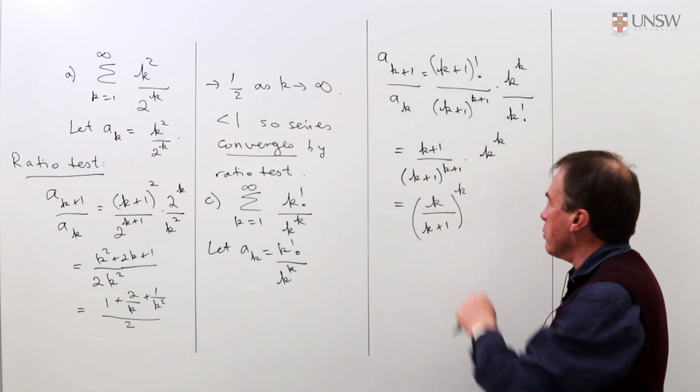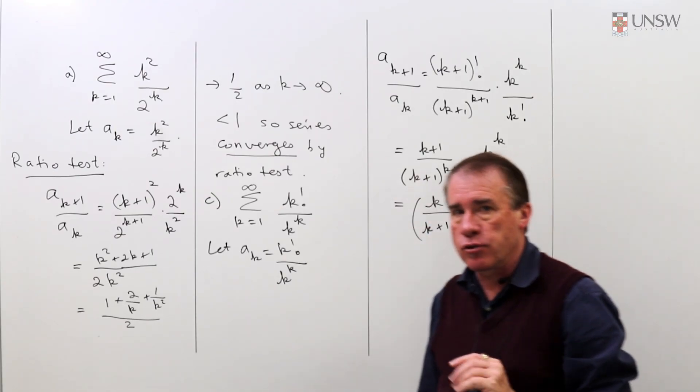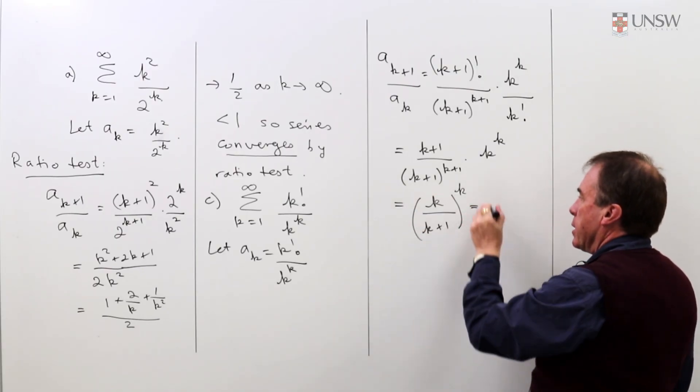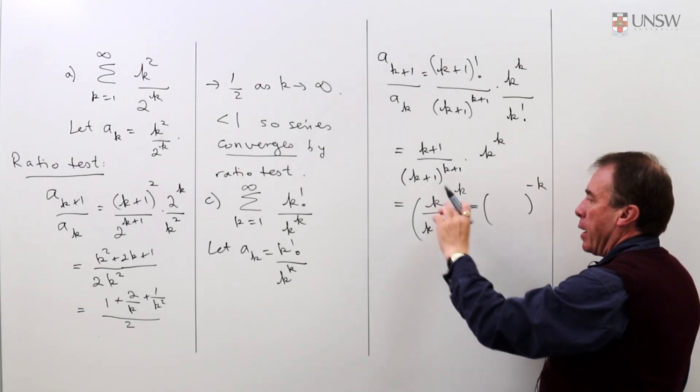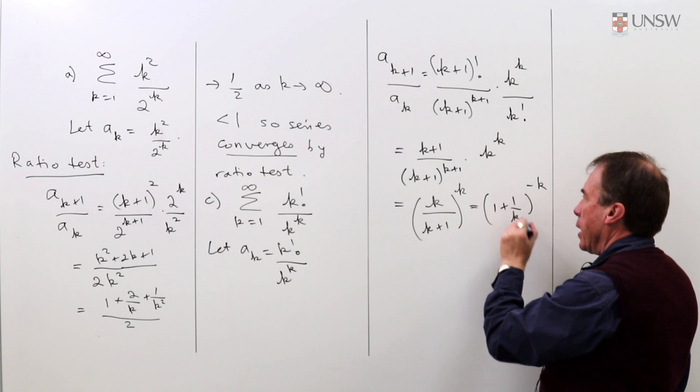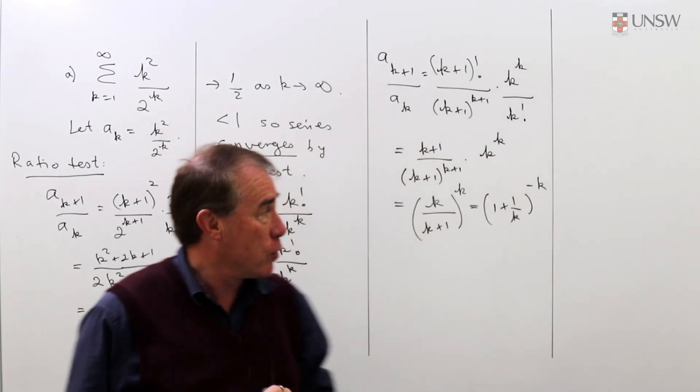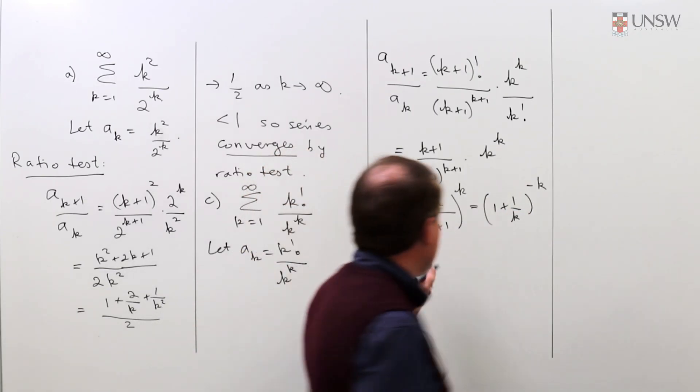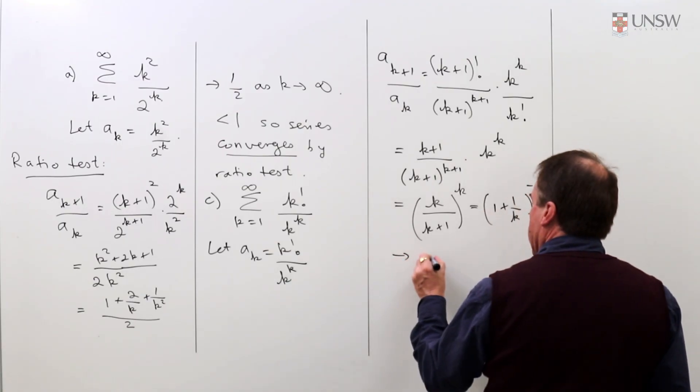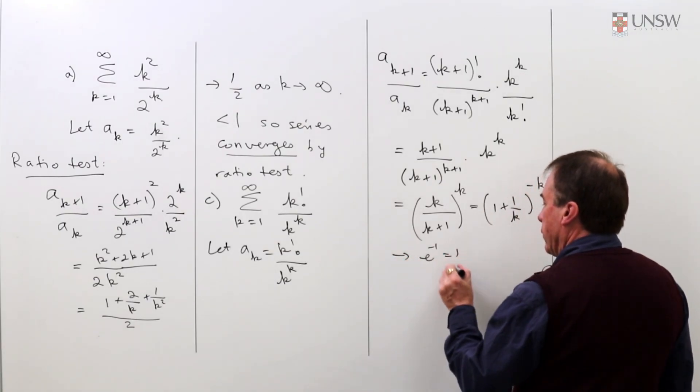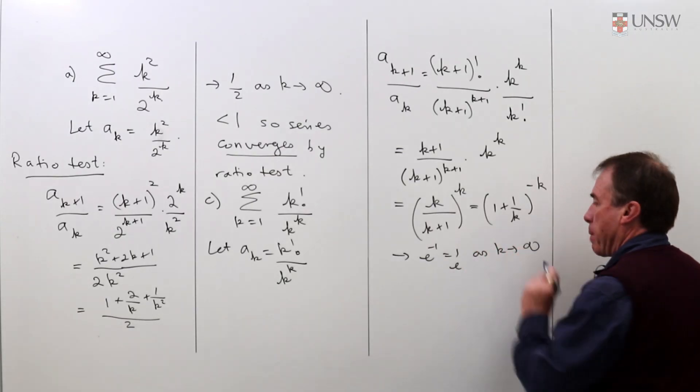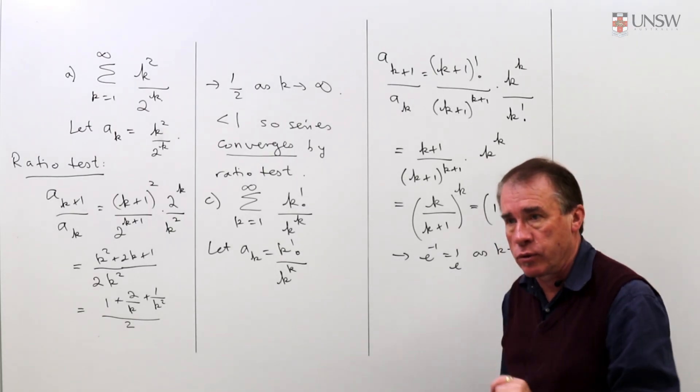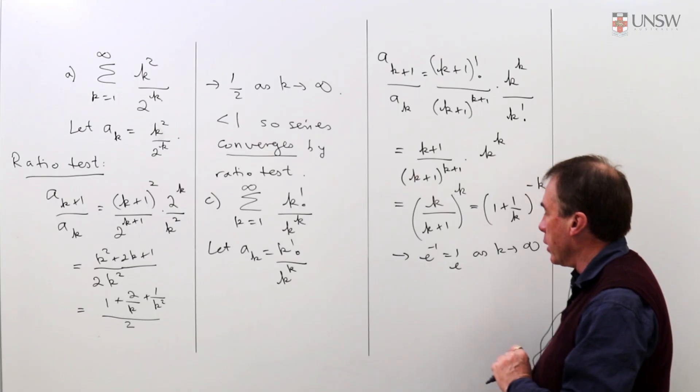The idea is you turn this upside down and write it to the power minus k. When you turn it upside down you get 1 plus 1 over k, which might be more familiar because you know that the limit of 1 plus 1 over k to the plus k goes to e, and this one is going to go to e to the minus 1 or 1 over e as k goes to infinity. That's one of those standard limits we've done earlier in the course.